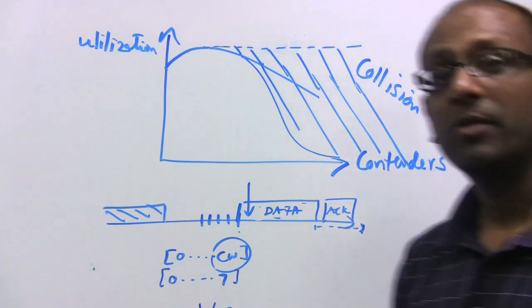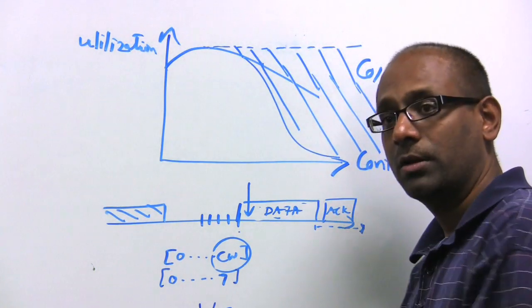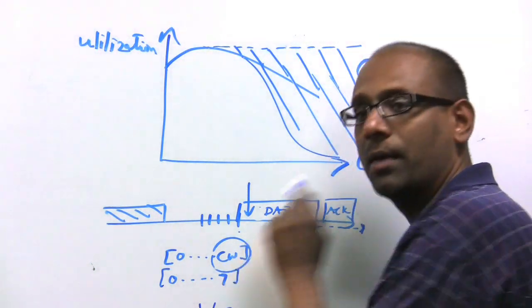This tells us something really critical. It tells us that it is crucial, even more crucial in 802.11 than in Ethernet, in terms of picking this contention window.